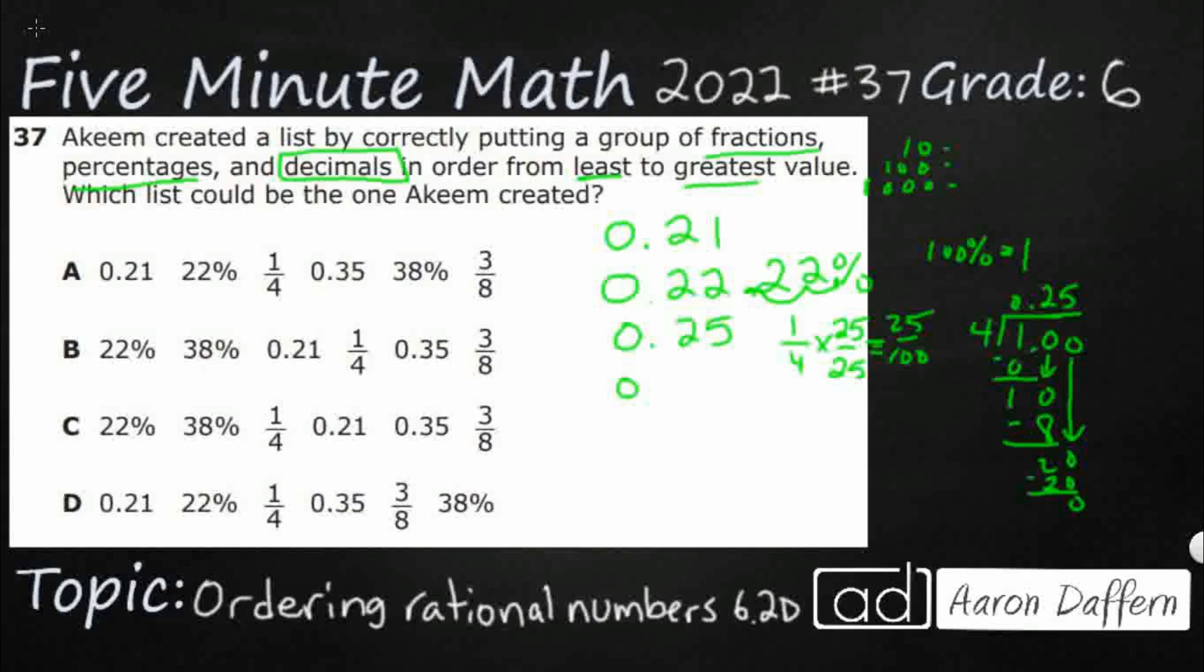All right, so now I've got 0.35 already in there. 38%. All right, so same thing. Move it once, twice. So far, it looks like it's completely in order. 3/8. Okay.